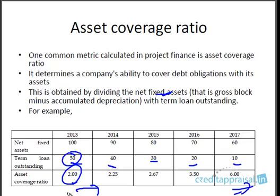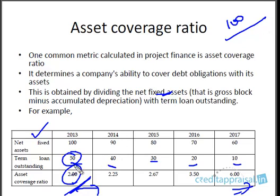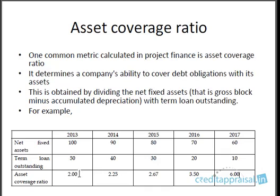When you calculate asset coverage ratio — net fixed assets divided by term loan outstanding — it is low initially, then goes on increasing because the term loan drops at a faster pace than fixed assets. Basically it tells you how many times the primary security — fixed assets — covers the term loan outstanding. In a way it is linked to margin: if the margin is less, the term loan outstanding would have been higher. Say net fixed assets is 100 in year one but the bank sanctioned 75 instead of 50 — the ratio would only be 1.33 instead of 2. Higher the margin, lower the asset coverage ratio.